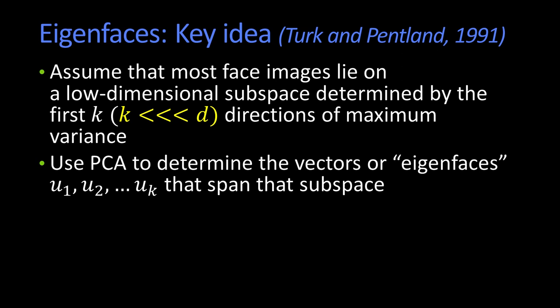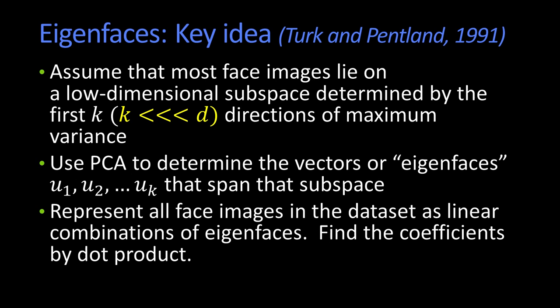So what they do is use PCA, like I just showed you, to find the vectors, or what are called the eigenfaces, U1 through UK, that span that subspace. So you take all your images, you find your eigenvectors. And now what you're going to do, and this is the really cool part, is you're going to represent your face images in that data set as just the linear combination of those eigenvectors.